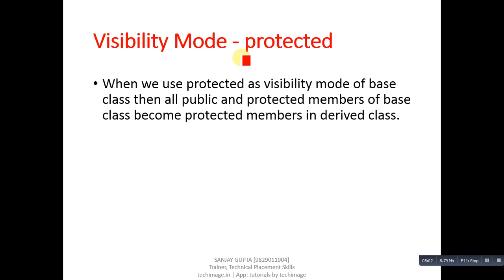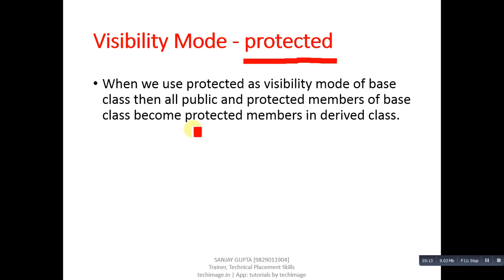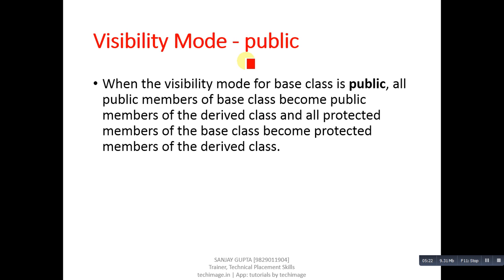The second visibility mode is protected. When we use protected as the visibility mode, all public and protected members of the base class become protected members in the derived class. They can be further inherited but cannot be accessed in the main function.